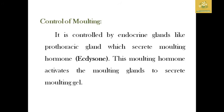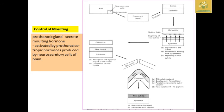Regarding the control of moulting: the moulting process is mainly controlled by the endocrine glands. The prothoracic gland secretes the hormone ecdysone — the moulting hormone — which activates the moulting process. This is how moulting is controlled in insects.